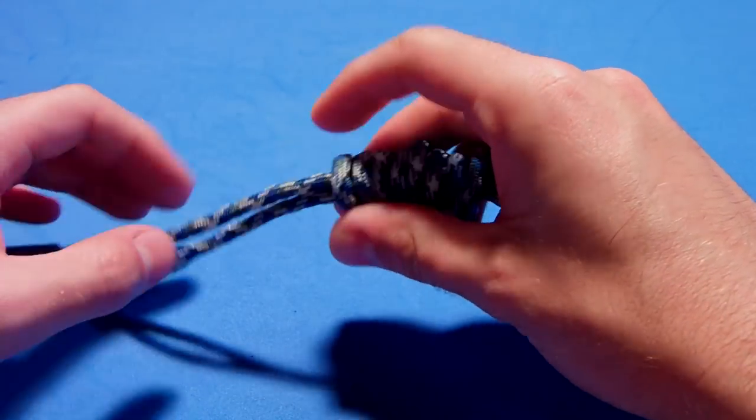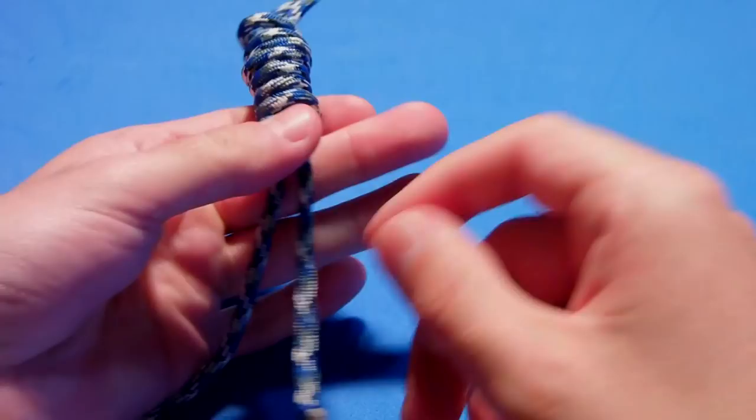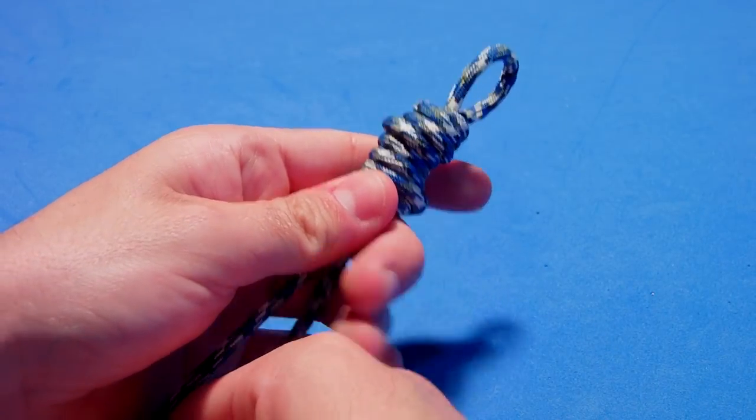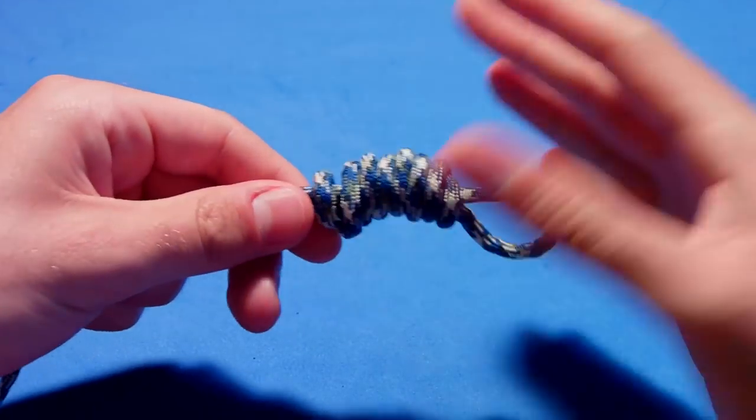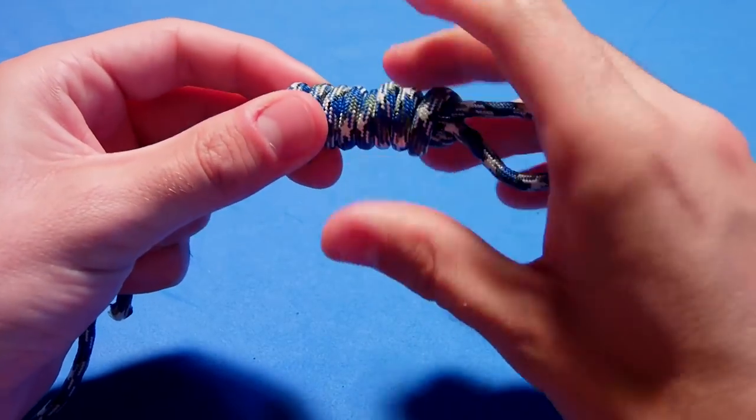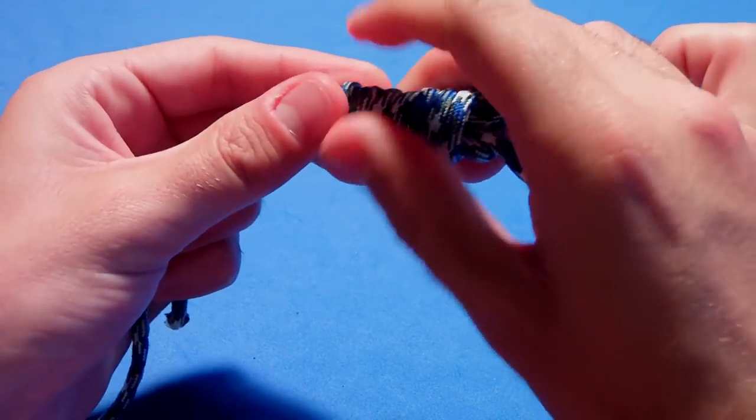The longer line went through inside all of the loops that we made, so we are starting to look like a decent lanyard. To finish it, just tighten it. As you can see, the last one got tighter but other ones are loose.